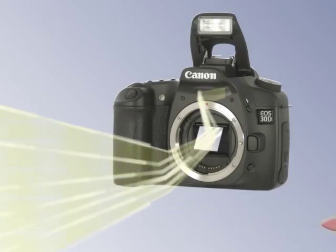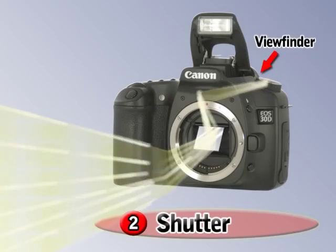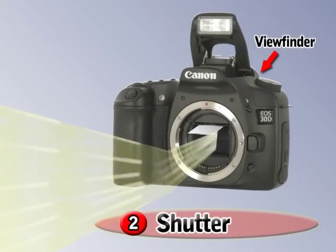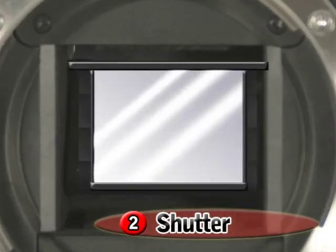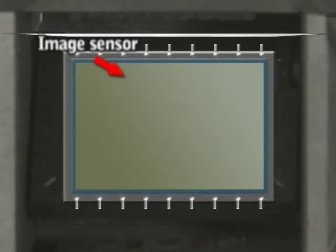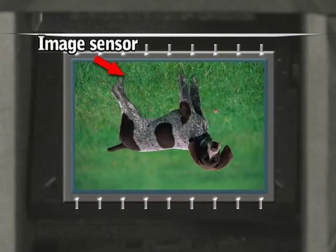Second, a shutter assembly which reflects the image into the viewfinder so you can see it, and which opens when you press the shutter button for a very precise period of time in order to expose the image sensor to the focused image.